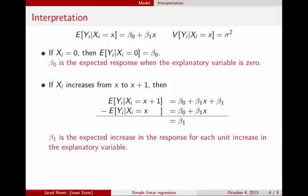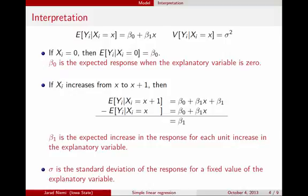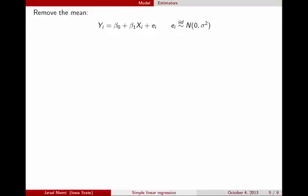Our third parameter is sigma squared, which comes from the variance statement. Sigma is the standard deviation of the response for a fixed value of the explanatory variable. That's the quick slide on interpretation. The next slide covers how to actually find estimates for these parameters.